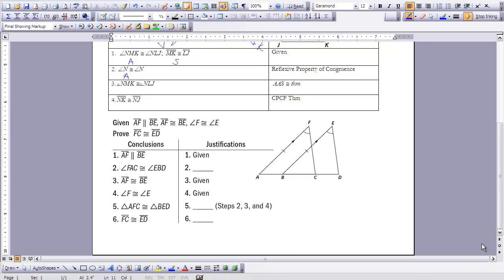Alright, let's take a look at this last proof here. We're given that some sides are parallel to each other, some sides that are congruent to each other and some angles. So the markings are on here. I think I'm going to wait to pull these triangles apart.